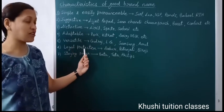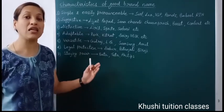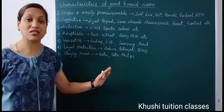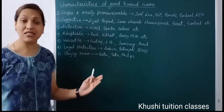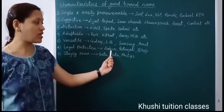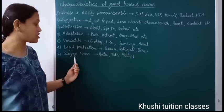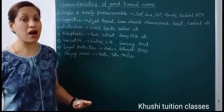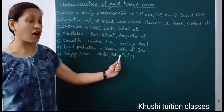The sixth characteristic is legal protection — if you register your brand name, it becomes your legal and intangible right, which no other person or firm can use. So the brand name should be one that has not already been used by someone else, like Dabur, Patanjali, Bikaji, etc. The last characteristic is staying power — it means the brand name can exist in the market for a long period of time, like Bata, Tata, Philips, etc.